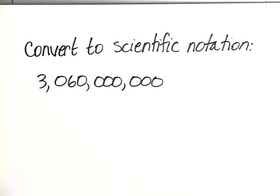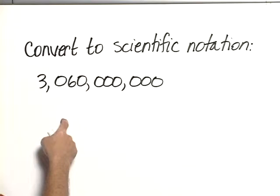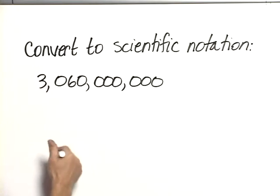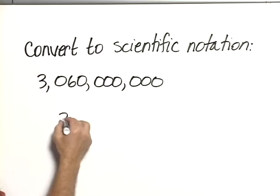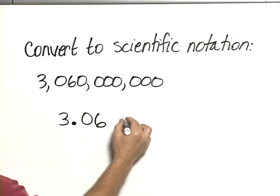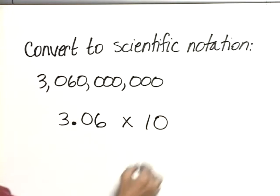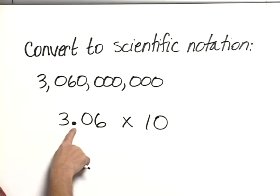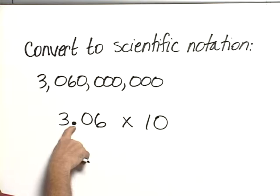Remember that in scientific notation we need a number that's at least 1, but no greater than 10. In other words, we need this decimal number, 3.06, and we're going to multiply that by 10 raised to the power, and the power is equal to the number of decimal places that we've moved the decimal point.